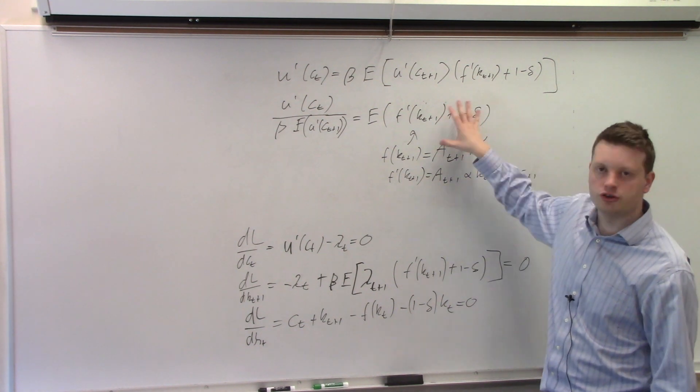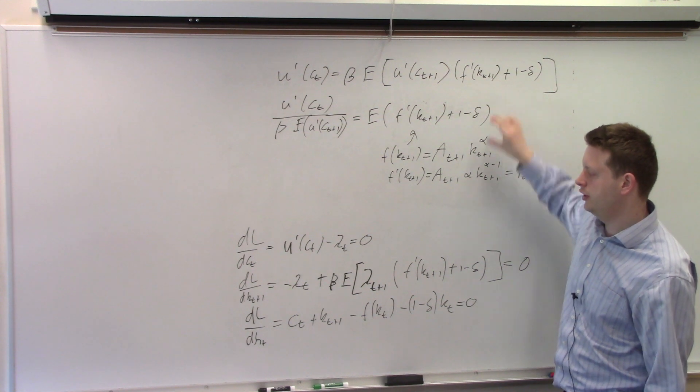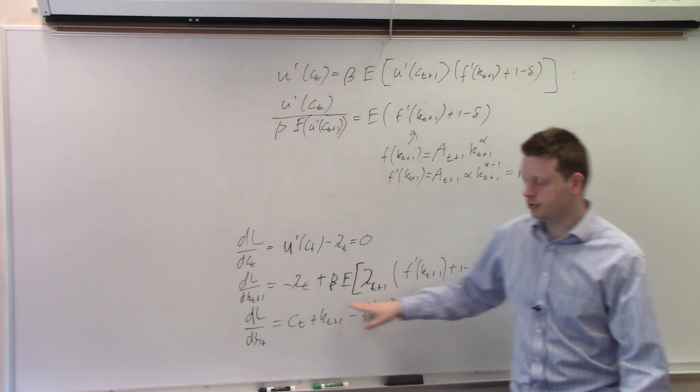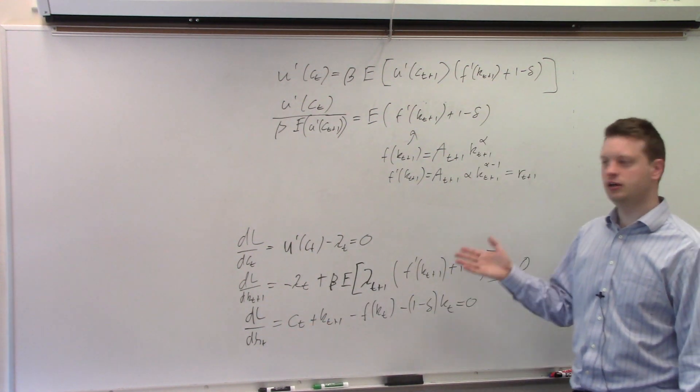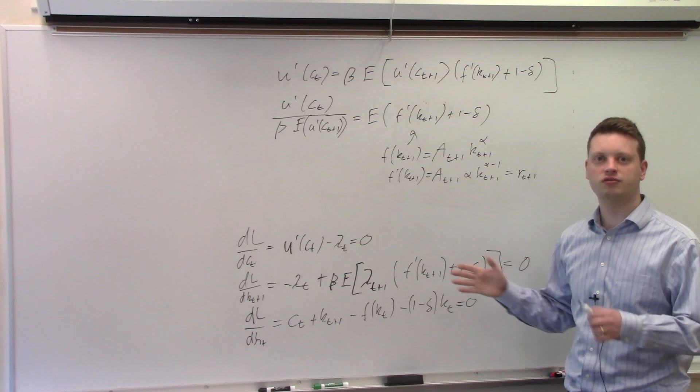To show the solution to the entire model, we need now this equation and we need the equation down here. The general constraint we had and we can get two nice curves from these two equations where we can find the equilibrium.